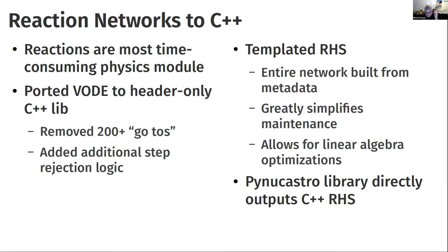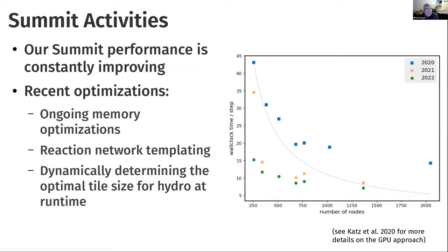There is also a Python project called pynucastro that directly outputs C++ code. A few lines of Python saying 'burn helium into carbon and oxygen' downloads nuclear reaction rates from the experimental community and writes out all the C++ code needed. This is a performance graph showing a 3D X-ray burst on Summit — blue points from 2020, orange from 2021, green from last week.